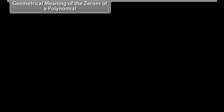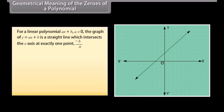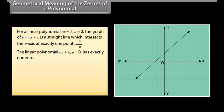Geometrical meaning of the zeros of a polynomial. For a linear polynomial ax plus b, where a is not equal to 0, the graph of y equals ax plus b is a straight line which intersects the x-axis at exactly one point, minus b upon a. Therefore, the linear polynomial ax plus b, where a is not equal to 0, has exactly one zero.